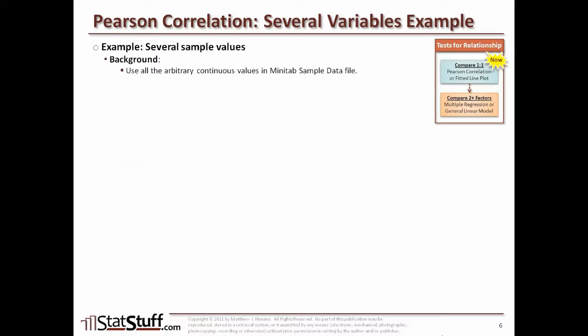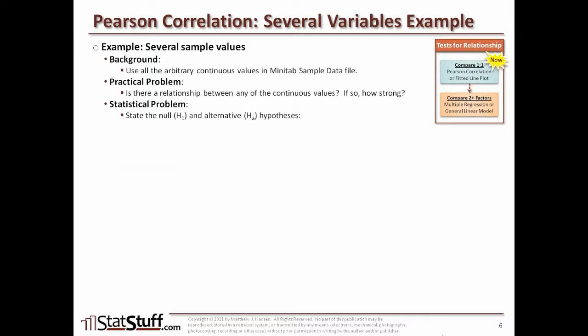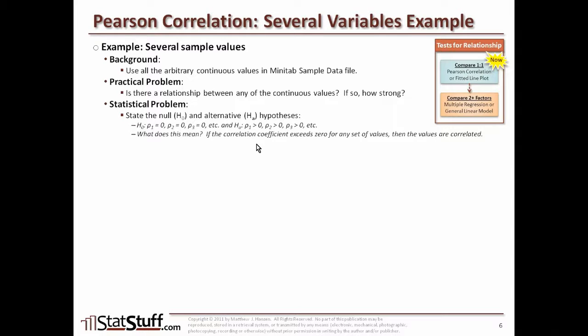Let's walk through an example using the Pearson correlation test. We'll use the Minitab sample data file from the website, selecting arbitrarily the different continuous values available. The practical problem: is there a relationship between any of these continuous values, and if so, how strong is it? For the statistical problem, the null hypothesis is that the correlation coefficient r equals zero for each group — meaning no correlation. The alternative is that r is greater than zero, indicating some correlation.